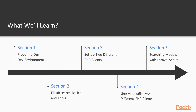We'll move on to some more intermediate concepts. We'll write some more advanced queries using the Elasticsearch query DSL, or domain-specific language. We'll look at all the different kinds of queries we can write and how we can use certain types of queries to combine different query types, writing larger, more advanced queries to get more specific results from Elasticsearch.